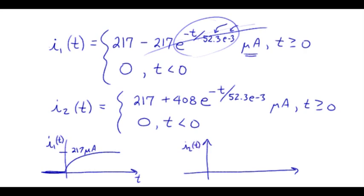I2 of T also started out at zero. Now in this case, when T equals zero, we've got e to the zero is one, so we have 217 plus 408, which is 625 microamps. These two graphs, of course, aren't to scale at this point. So 625 microamps.